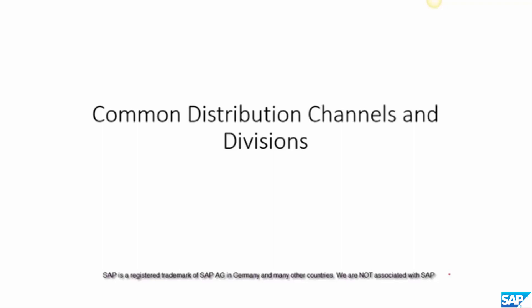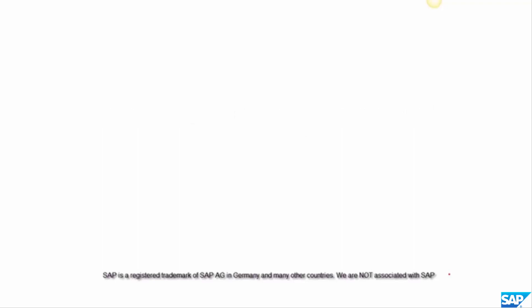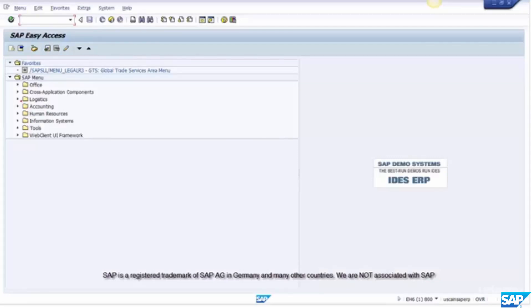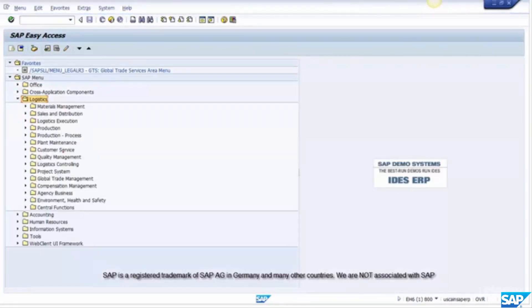In this chapter we are going to talk about common distribution channels and divisions. Before we talk about the details, let me do a quick experiment. Can you create a customer master with a blank or a wildcard distribution channel or division? Meaning, when you create the customer master sales view, you enter the details of sales org, say 1000, distribution channel 10, 20, or 30, and division 00. Can you wildcard this — put a star or a blank?